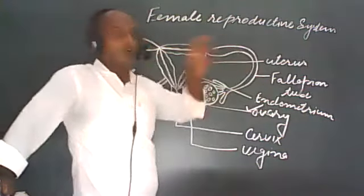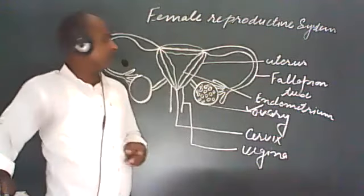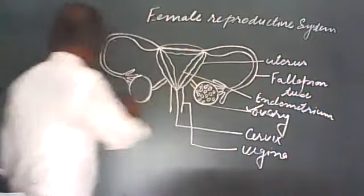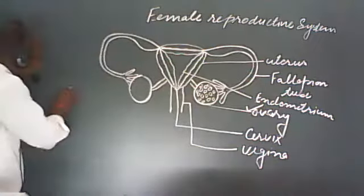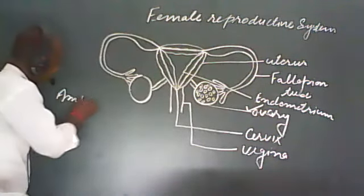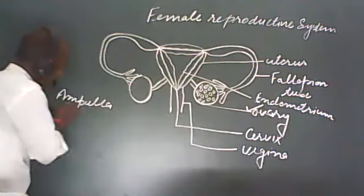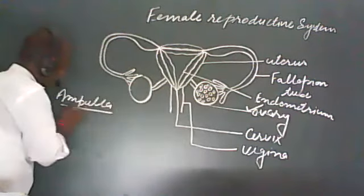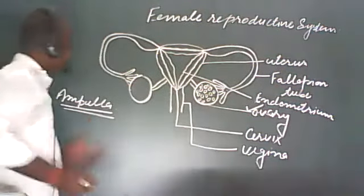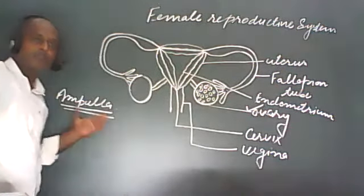There is a swollen part in the fallopian tube called the ampulla. This part is not given in your book, but you should have knowledge of the ampulla — it is the swollen part of the fallopian tube.